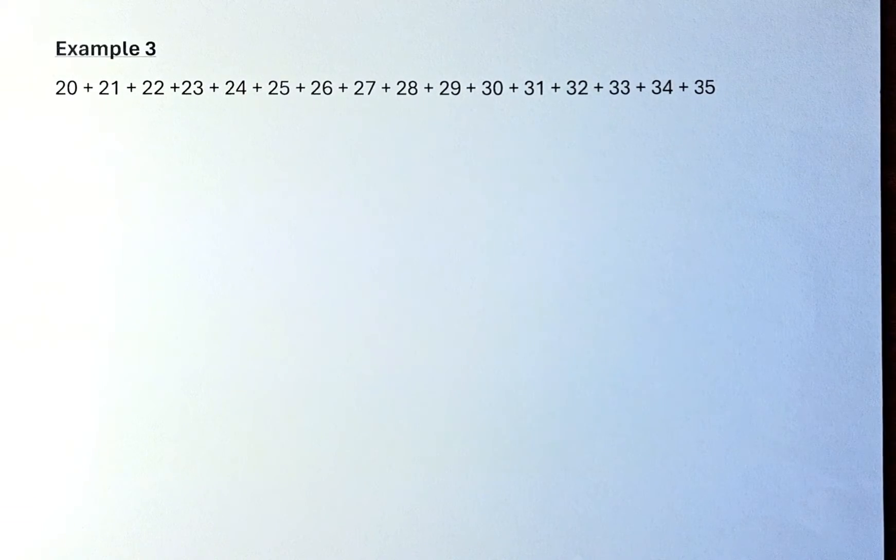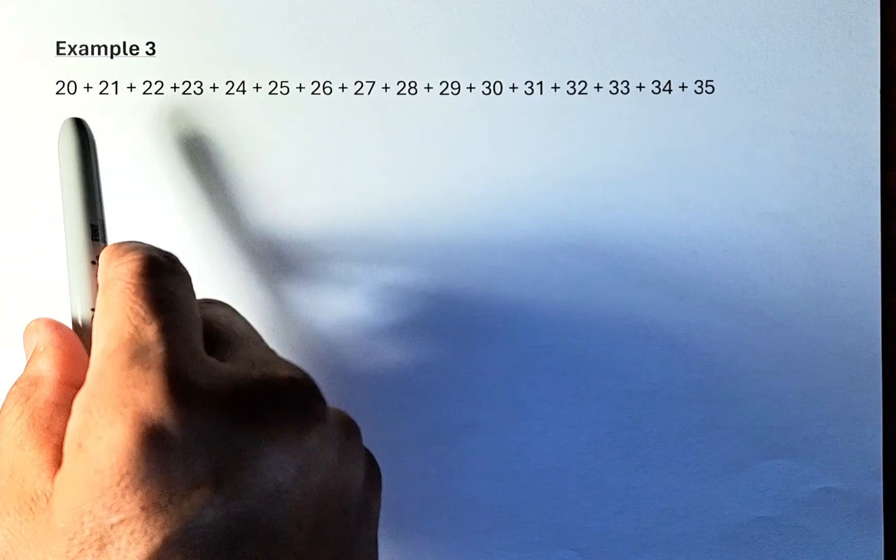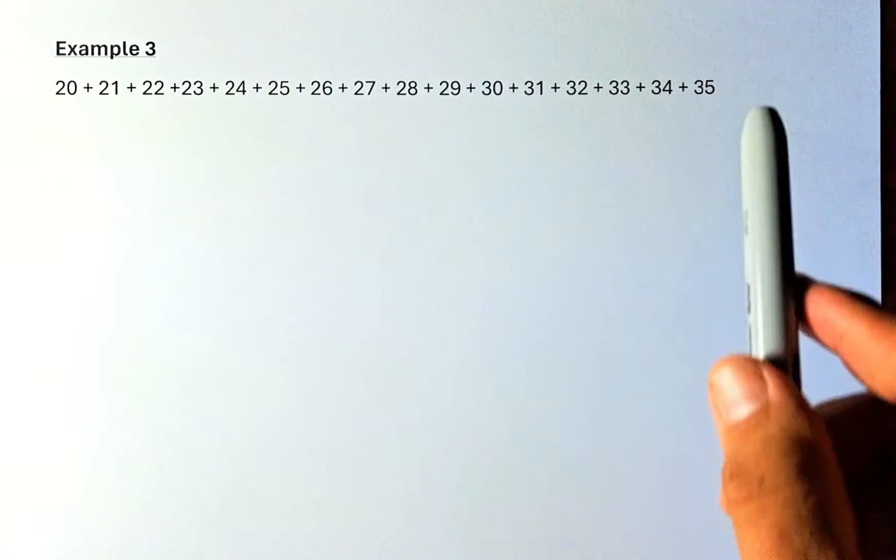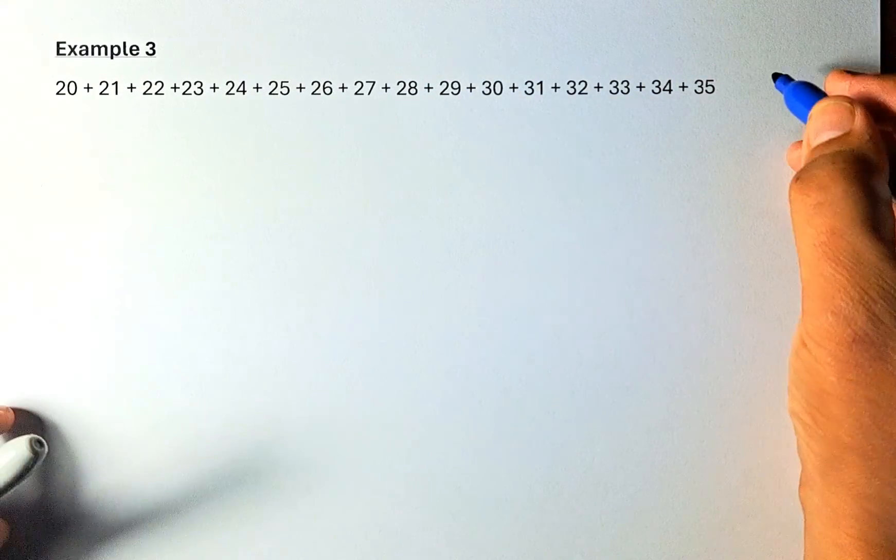we are going to do a little bit harder but it's still not too hard. We are going to add 20 plus 21 plus 22 plus 23 plus 24 all the way to 35. So if you count the numbers, 20, 21, 22, 23, 24, 25 all the way to 35, they are all together 16 numbers.